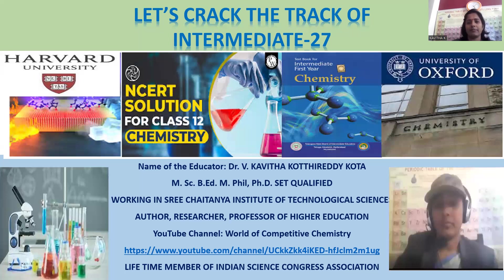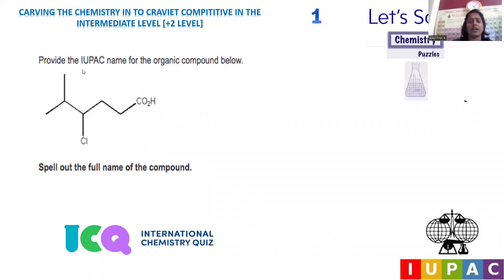Let's enter into question number one. This question is based on IUPAC nomenclature of organic compounds — provide the IUPAC name for the following organic compound. There is a long chain with carboxylic acid as the functional group, a chloro substituent, and a methyl branching. We have to start numbering from the end where the highest priority group is located, so numbering starts from the carboxylic acid. Being a carboxylic acid, we go for alkanoic acid as the IUPAC nomenclature, and the long chain is taken as the parent chain.